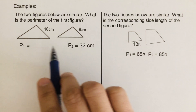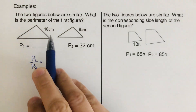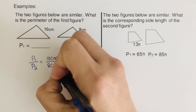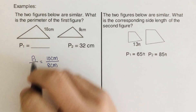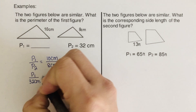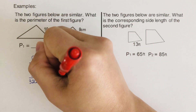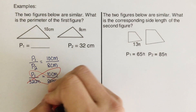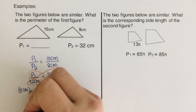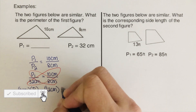The rule says the ratio of the parameters gives us P1 over P2 equal to the ratio of their side lengths. So I write P1 over P2 equals 10 centimeters over 8 centimeters. Plugging in values: P1 is missing, so I keep it as P1; P2 is 32 centimeters. So P1 over 32 centimeters equals 10 over 8. We want P1, so we cross-multiply: P1 times 8 centimeters equals 32 centimeters times 10 centimeters.